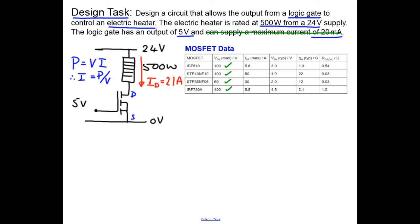The next thing we need to look at is the other characteristics. The maximum drain source current is only 5.6 amps and 5.5 amps for these two MOSFETs, so they're not suitable. However, the two middle MOSFETs are suitable, so we're left with a choice between these two.